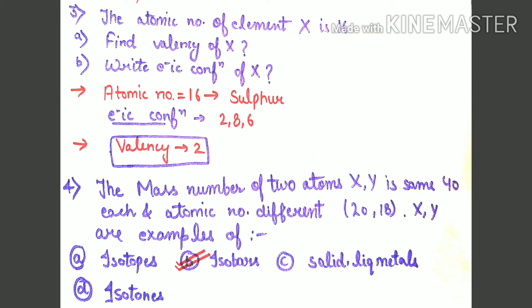Question number 4: The mass number of two atoms X and Y is 40. Atomic numbers are different, 20 and 18. Then X and Y are examples of what?